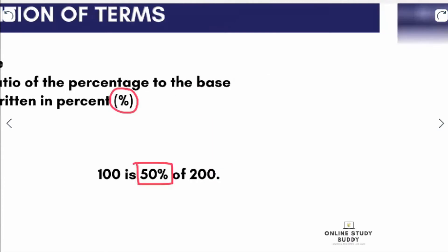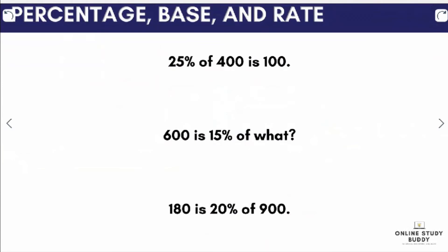For the following examples, let us identify which is the percentage, the base, and the rate. We'll use P for percentage, B for base, and R for rate. For the first example: 25% of 400 is 100. So we immediately know that 25% is our rate R. 400 is associated with the word 'of', therefore 400 is our base B. And 100 is our percentage P.